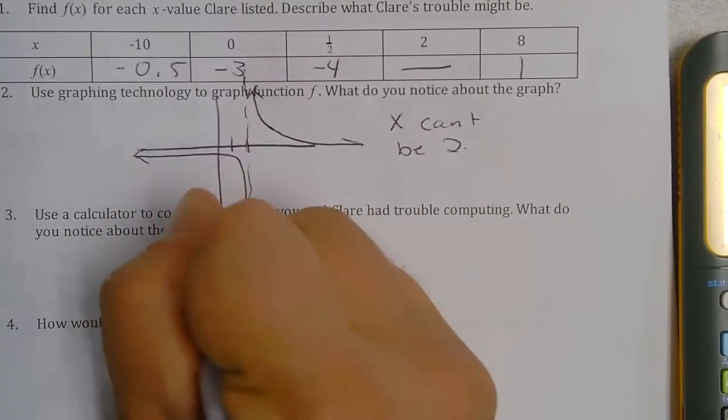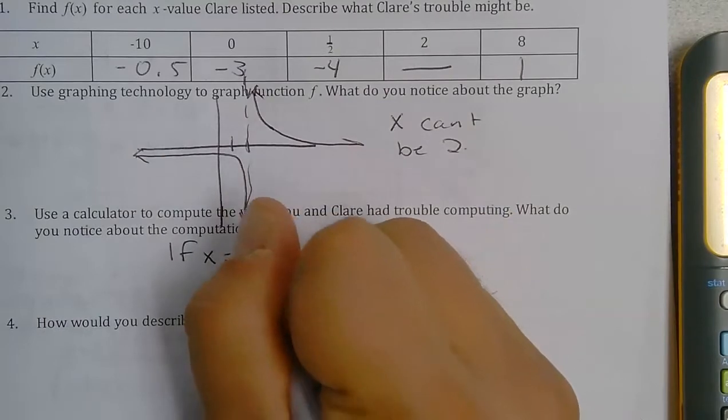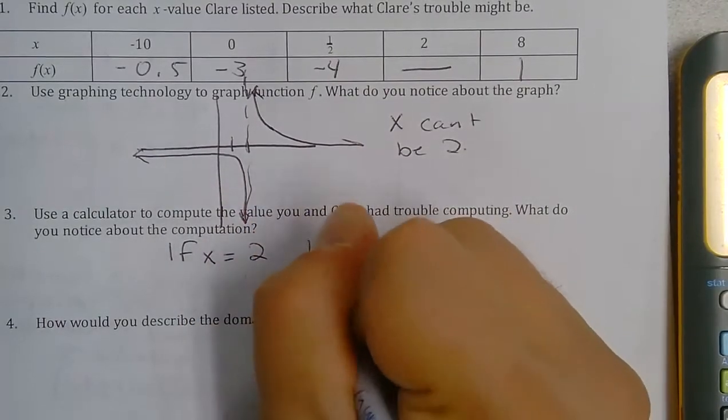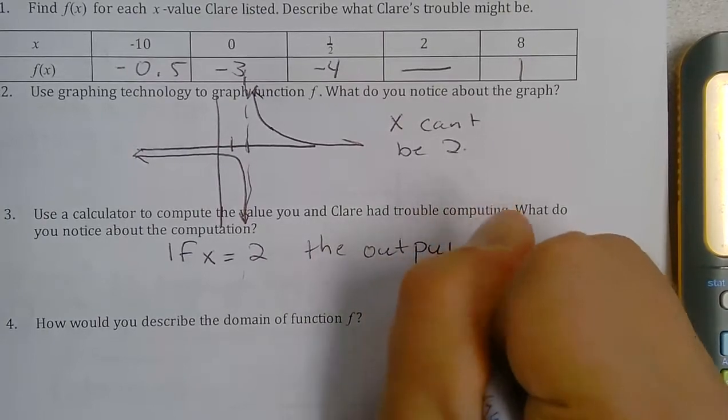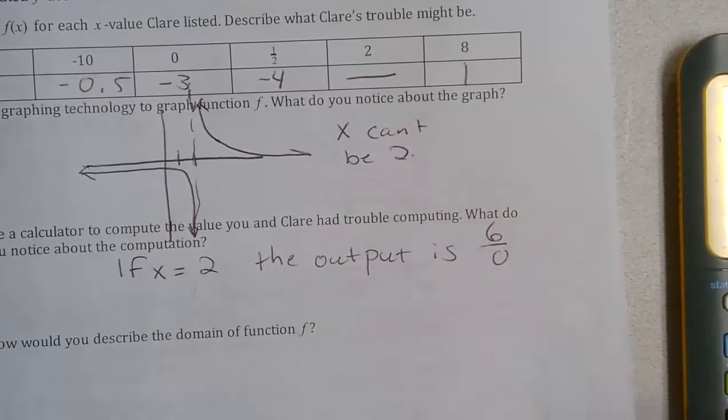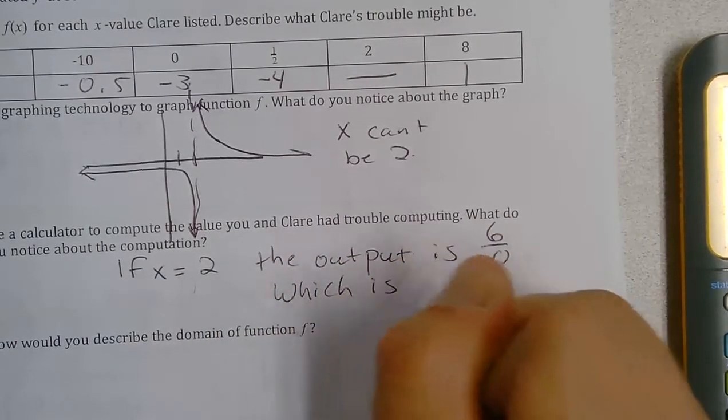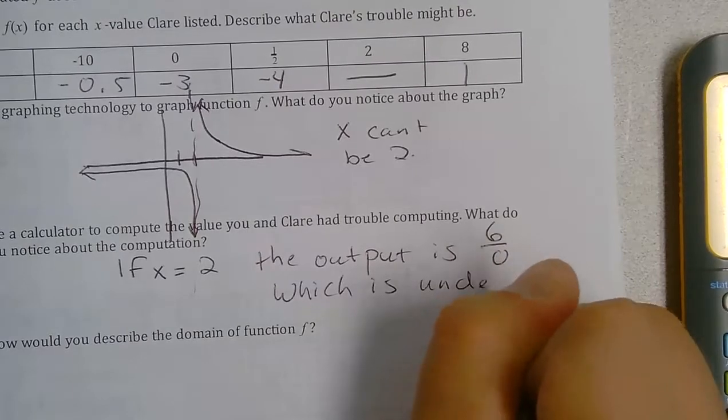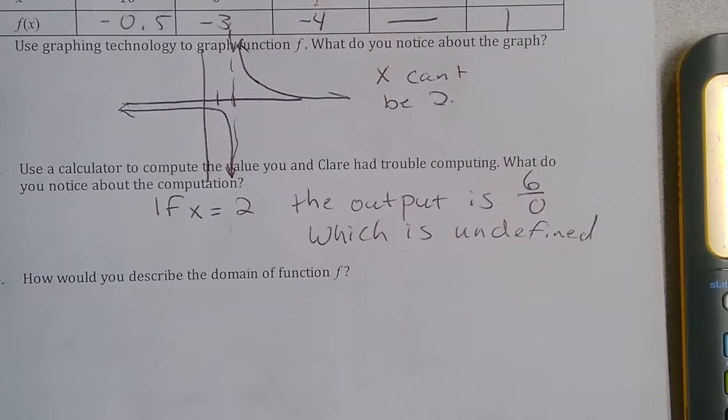So the reason that that happens, if x equals 2, the output is 6 divided by 0, which is undefined. So that's why you have that funny stuff happening on the graph.